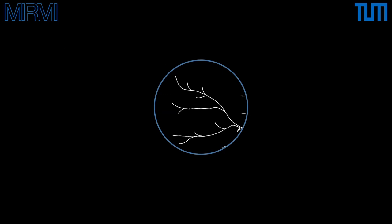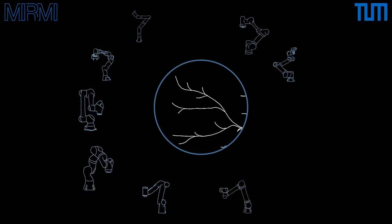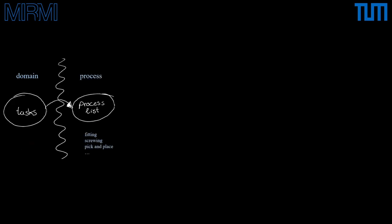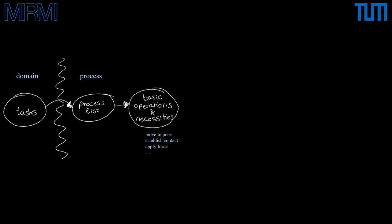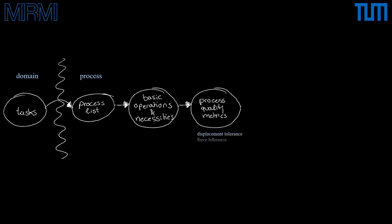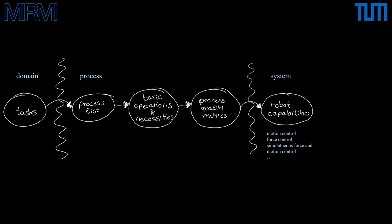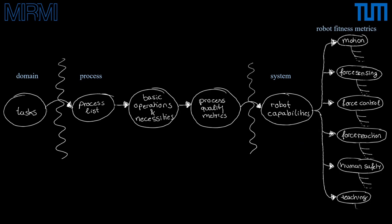The question is how we can define the fitness groups forming the genus and which group certain species belong to. To answer this, we look at today's best-studied group of robots — commonly available industrial manipulators — analyzing generally required and available robot capabilities using 11 single species of this family. To quantify robot capabilities, we apply a general pipeline resulting in fitness metrics. Based on required tasks, we structure a collection of required tasks in one use-case domain into generally required processes, then derive basic operations and necessities to perform any process. These define process quality metrics, which transfer into the system space to define concrete robot capabilities quantified by robot fitness metrics — grouped by motion, force, sensing, control, reaction, human safety, and teaching.